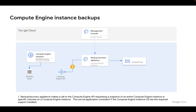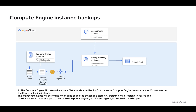Backup creation is a fairly simple process. First, a Compute Engine API call is sent, which requests that a snapshot be made of the persistent disks of protected Compute Engine instances. We can either back up specific persistent disks, or we can back them all up, and that backup data is stored in the region that we set in our backup plan.